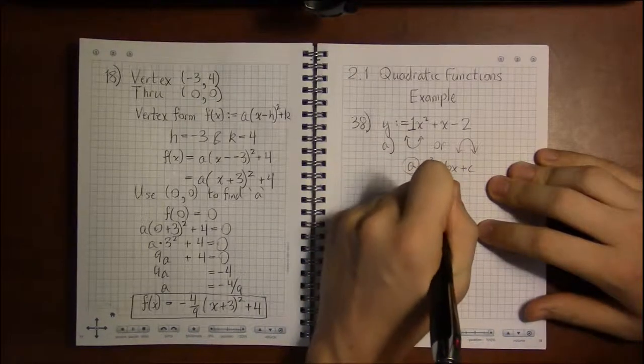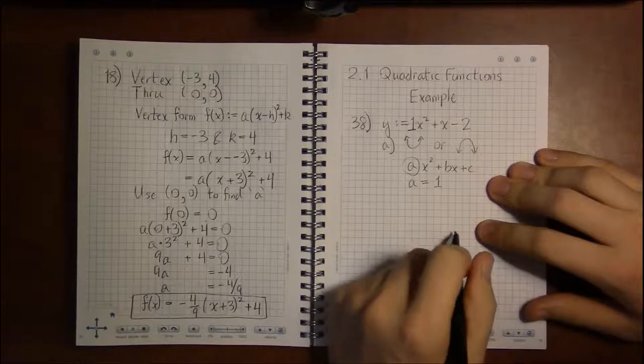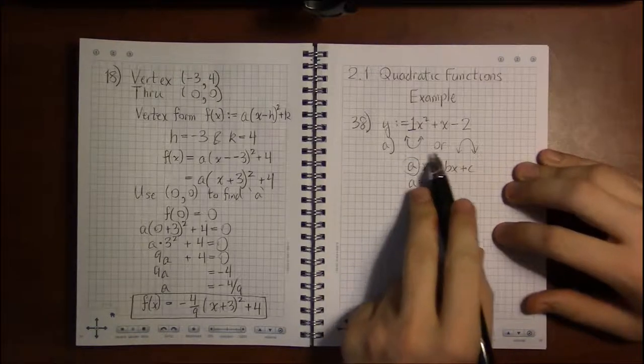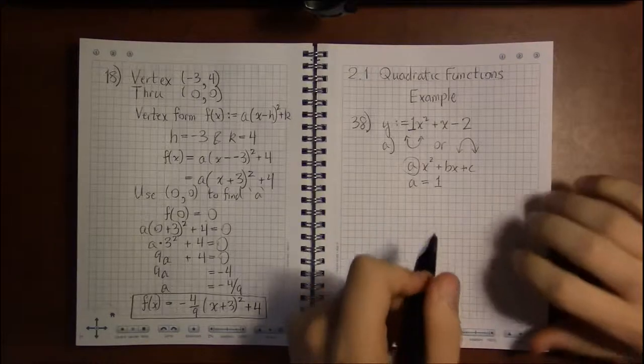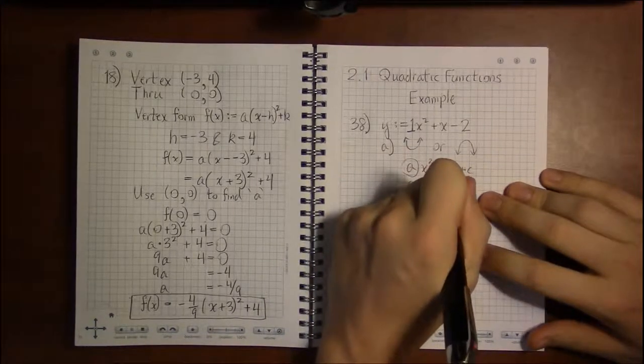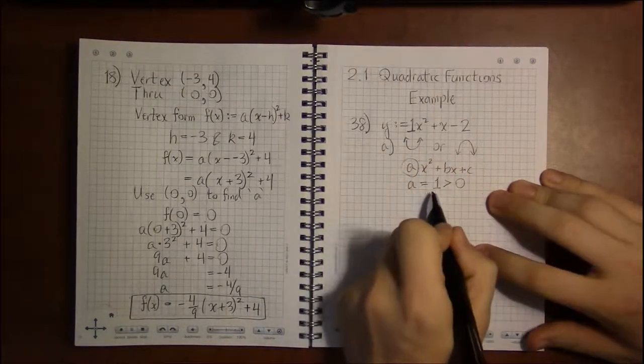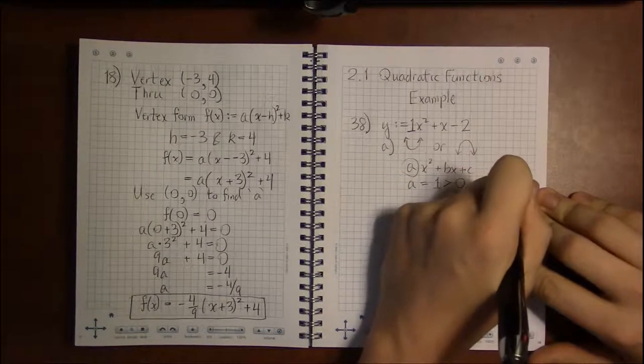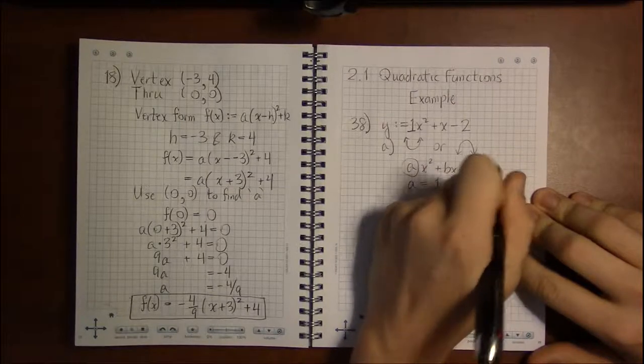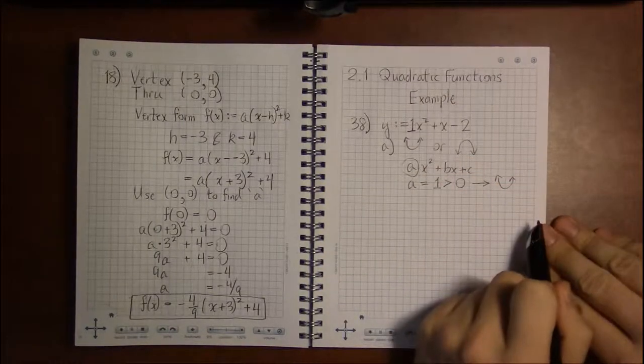So our a we can now see as being 1. And whether it opens up or opens down depends on whether it's positive or whether it's negative. And in our case it's positive, it's greater than 0, which means that the graph is gonna open upwards.